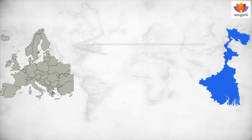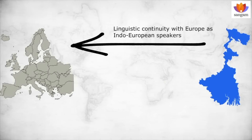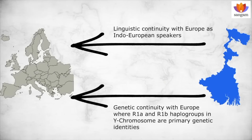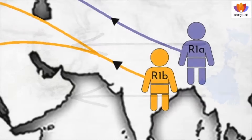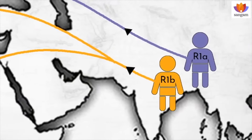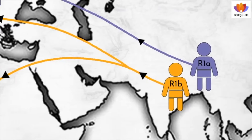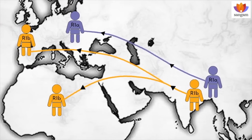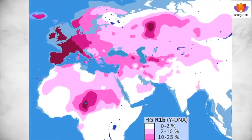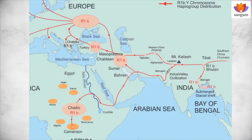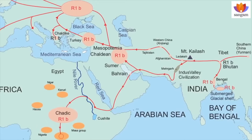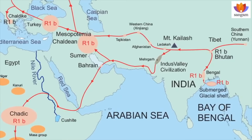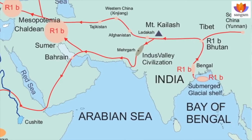It is interesting to observe that the Bengal region not only has linguistic continuity with Europe as Indo-European speakers, but it also has genetic continuity with Europe where R1-alpha and R1-Bravo haplogroups in Y chromosome are primary genetic identities. It is likely that a very early migration of post-glacial period anatomically modern humans or AMH fraternities like R1-alpha and R1-Bravo haplogroups had taken place from India to the west with their language and culture. They originated on the Bengal coastal shelf and migrated along the Himalayan rivers as their settlements submerged at the onset of the interglacial period.